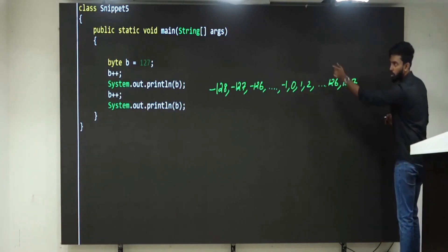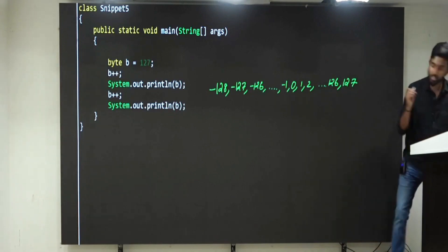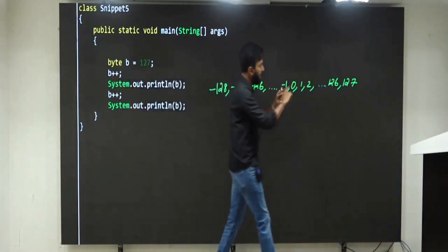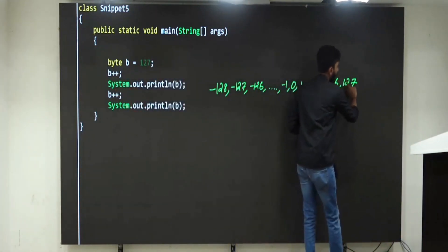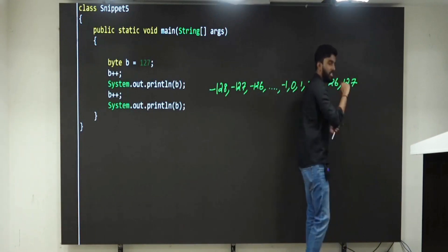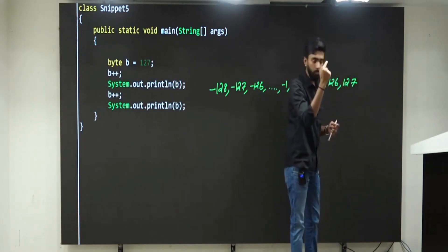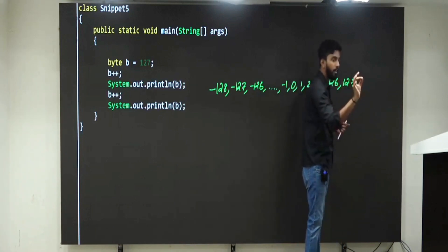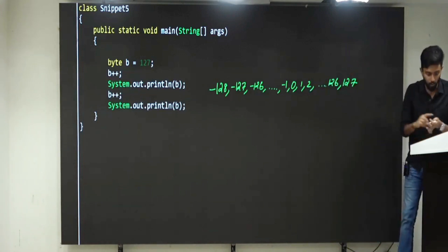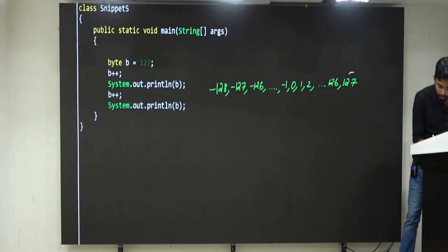Now, what have you stored inside b? 127. Which means in the next line, you are telling b plus plus. B plus plus means 128. Is it inside the range or outside the range? Outside. Which means Java will not give error. Instead, how many values outside the range? One value. Which means, watch it, it will wrap around.